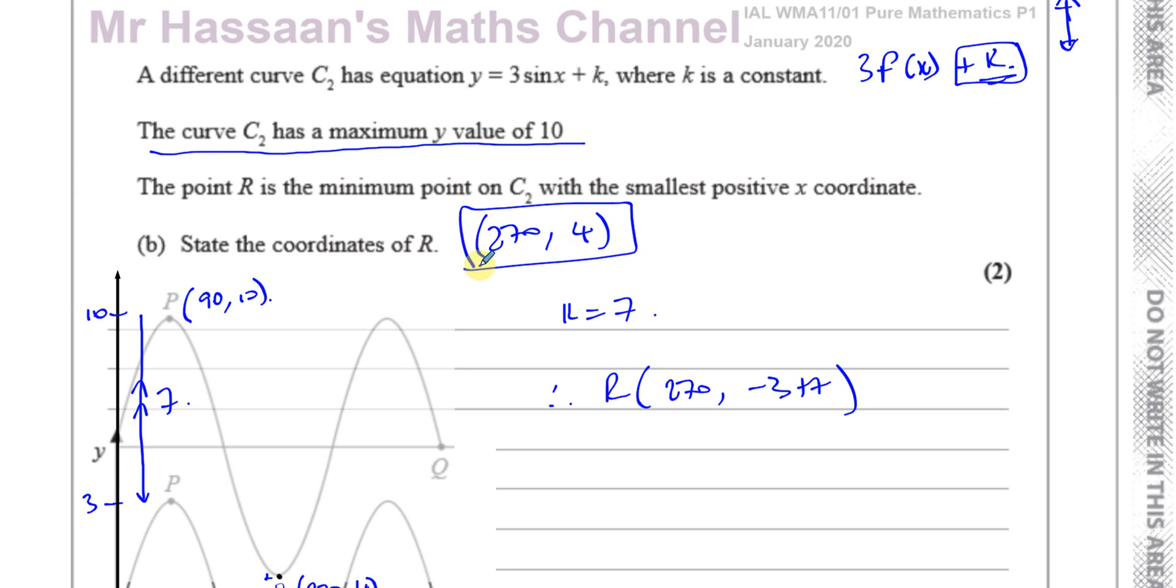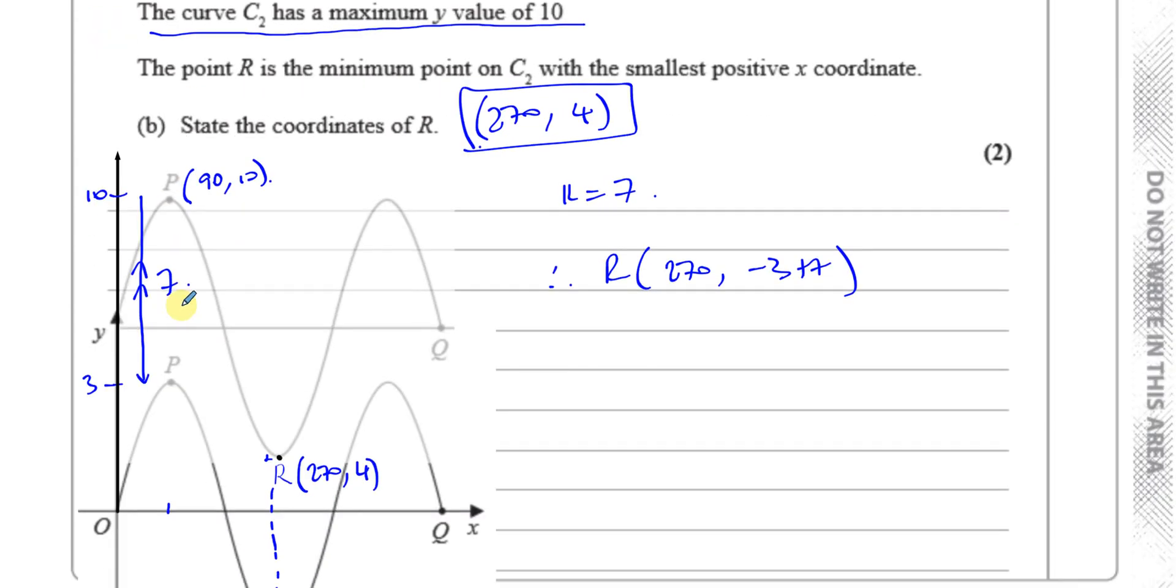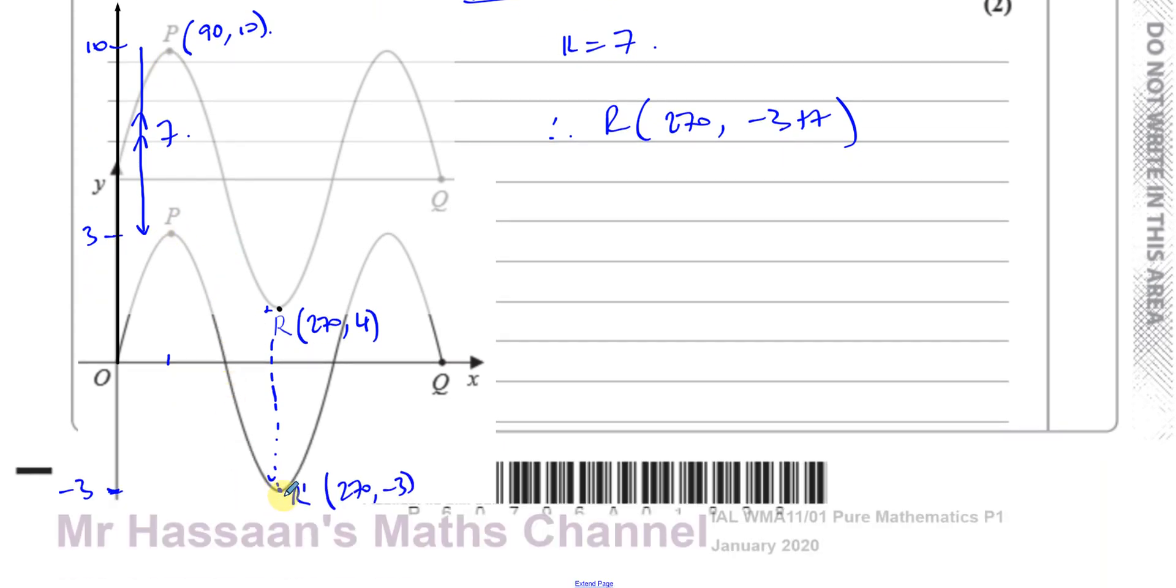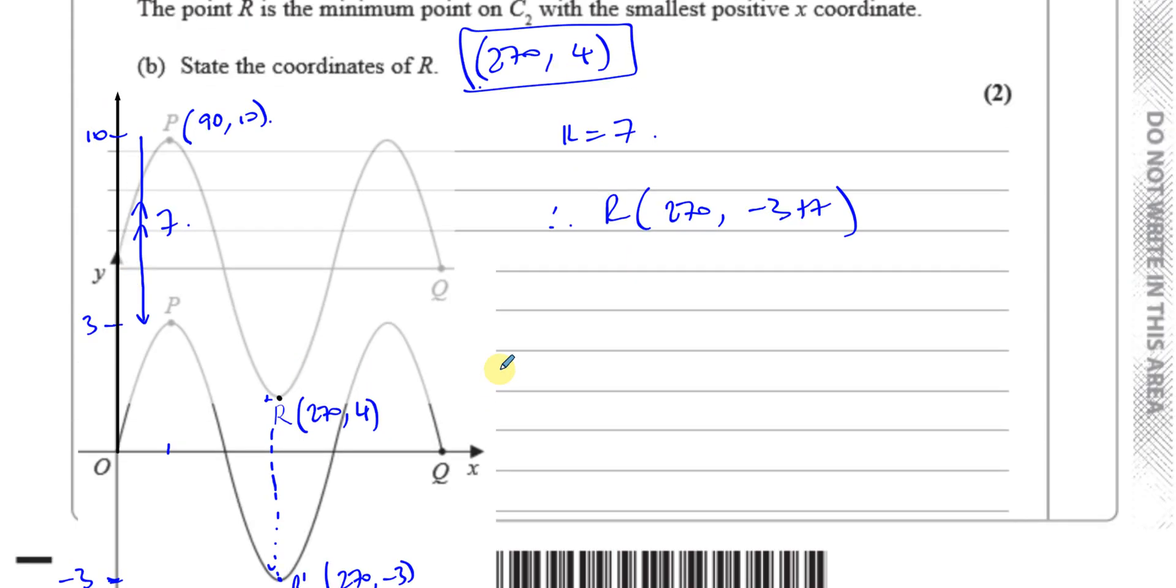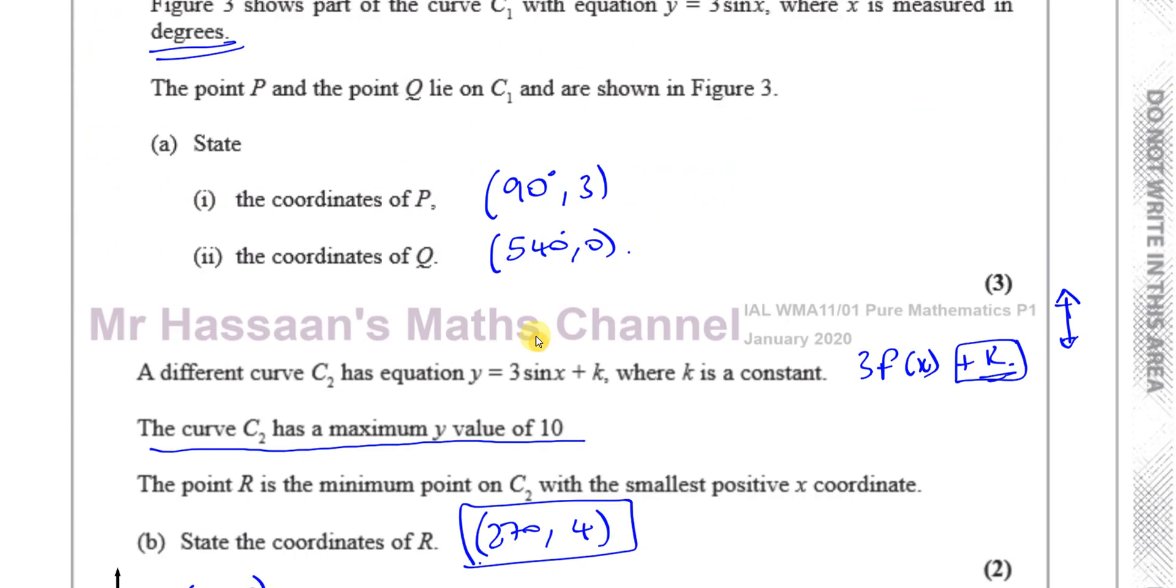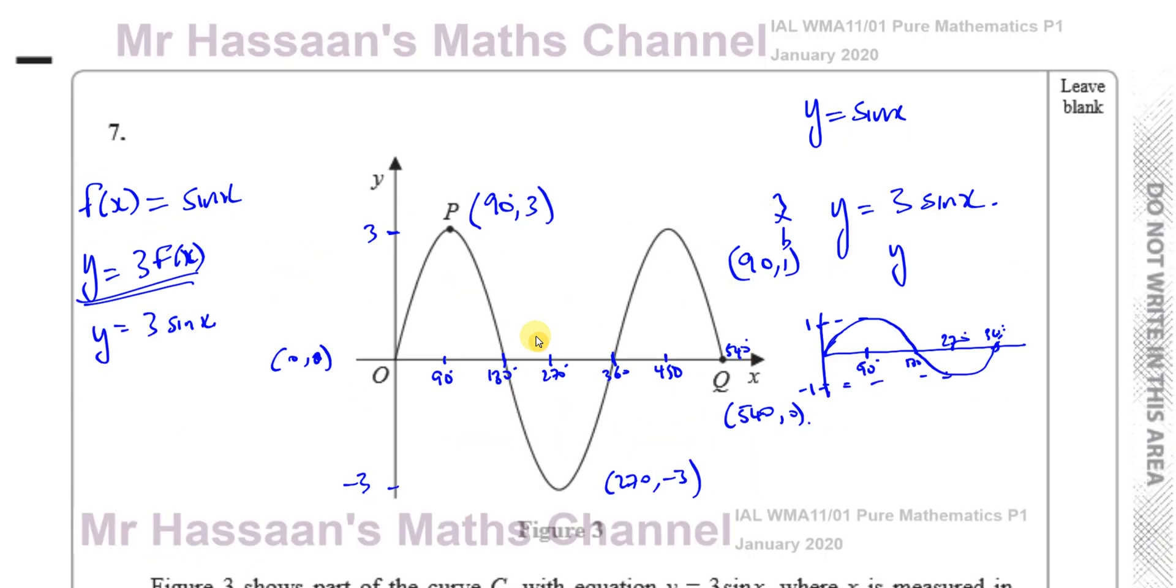And there's the answer to part B. It's pretty simple - the whole curve moved up 7 units because the maximum went from 3 to 10. Therefore the minimum value at point R, which is (270, -3), must have gone up to (270, 4) by adding 7 units to it. So it's a straightforward question, the one on trig from this paper.